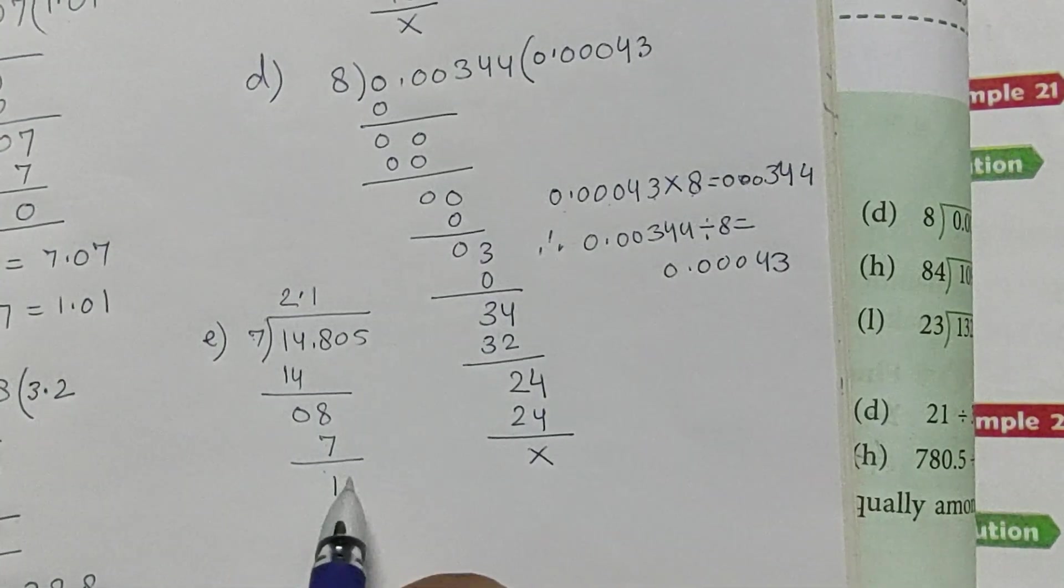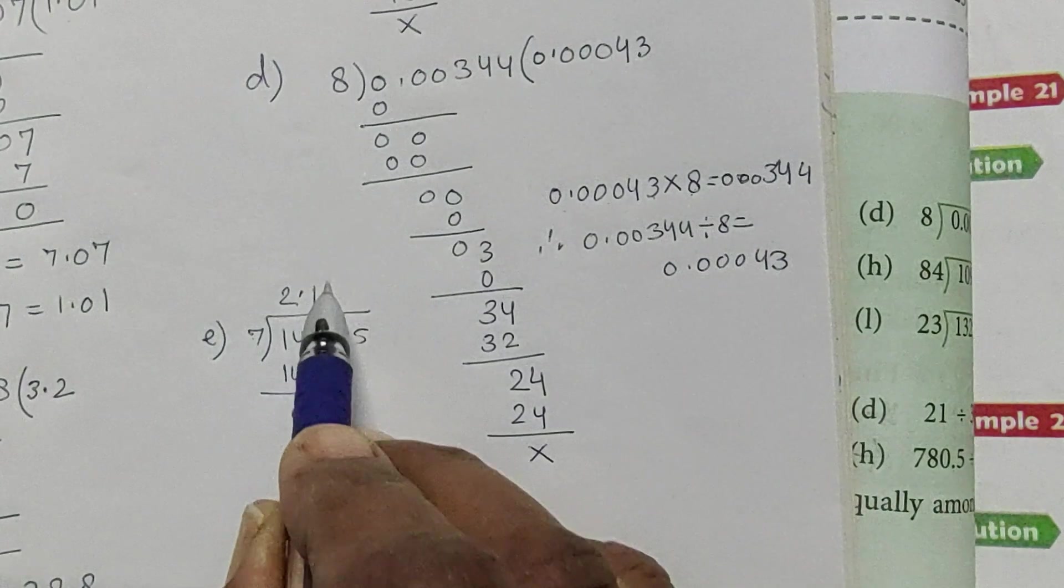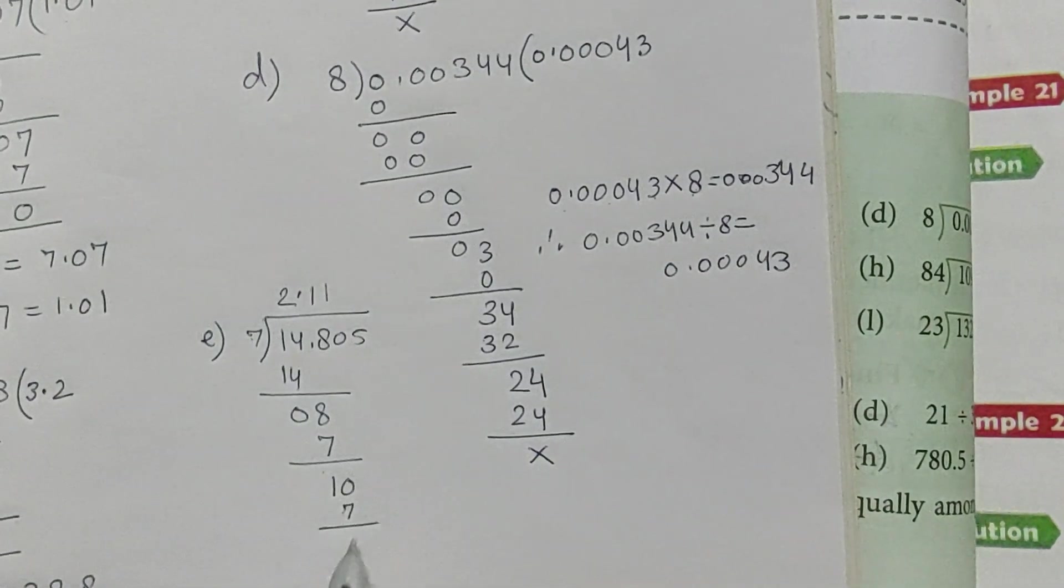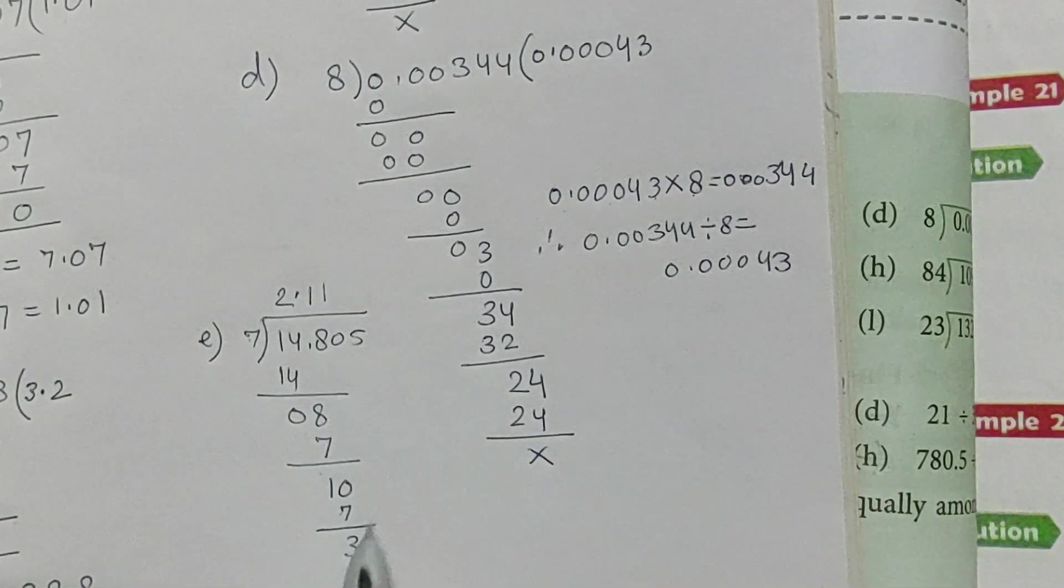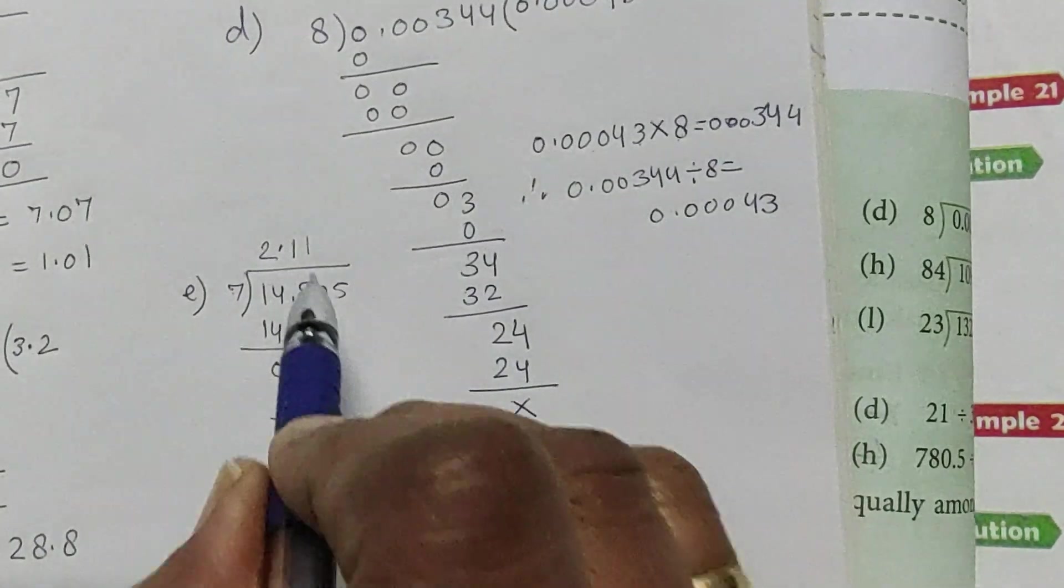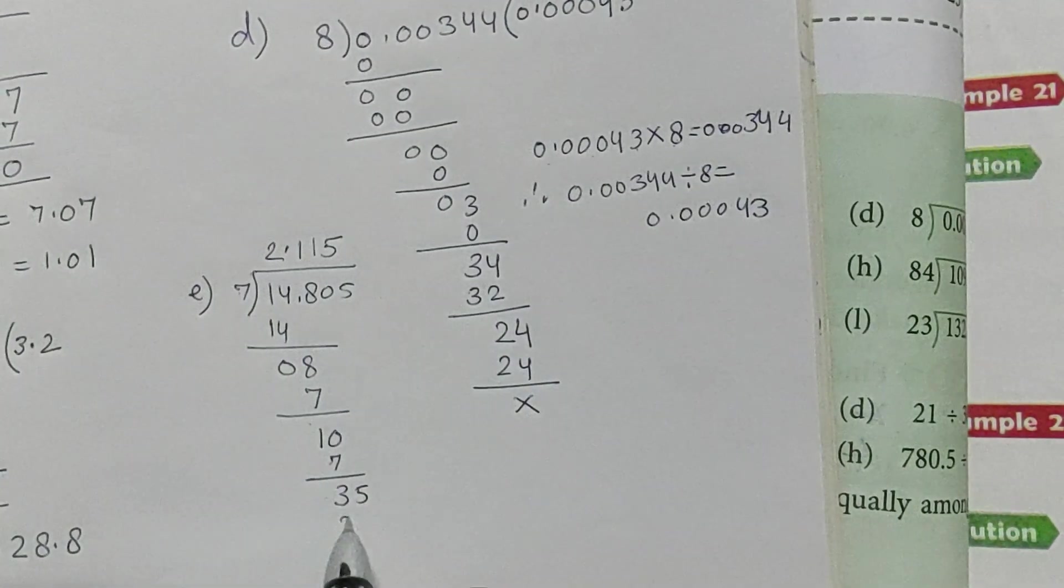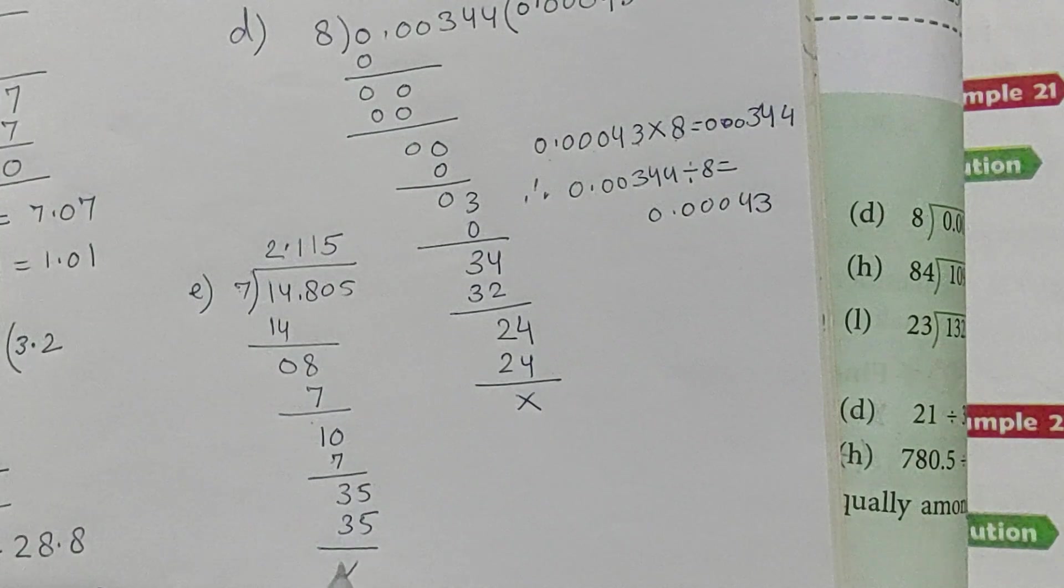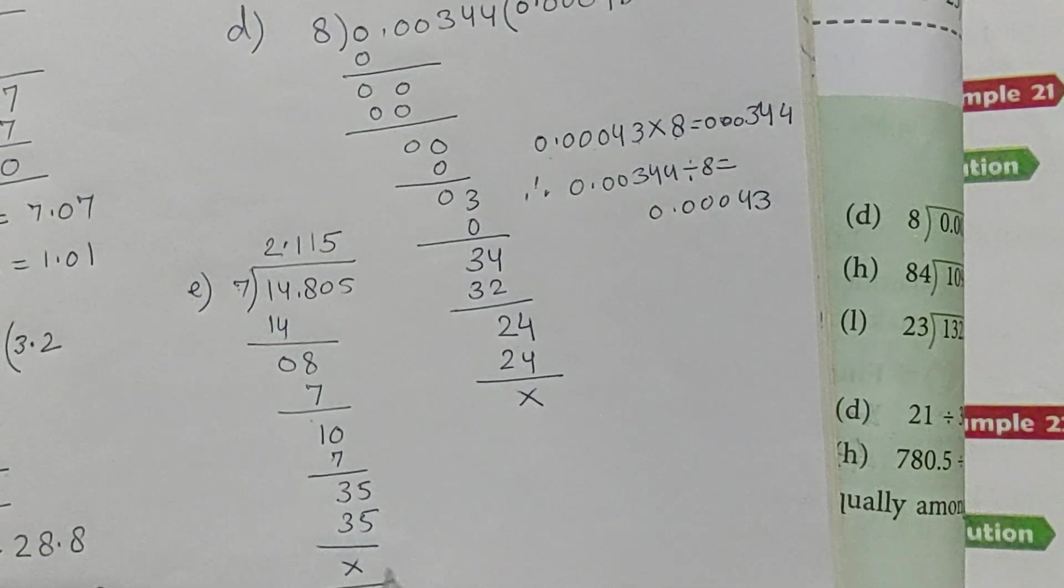14.805 divided by 7. 7 into 2 is 14. Zero point. Bring down 8. 7 into 1 is 7. 8 minus 7 is 1. Bring down 0. 7 into 1 is 7. Bring down 5. 7 into 5 is 35. Division is complete. Now we will check.